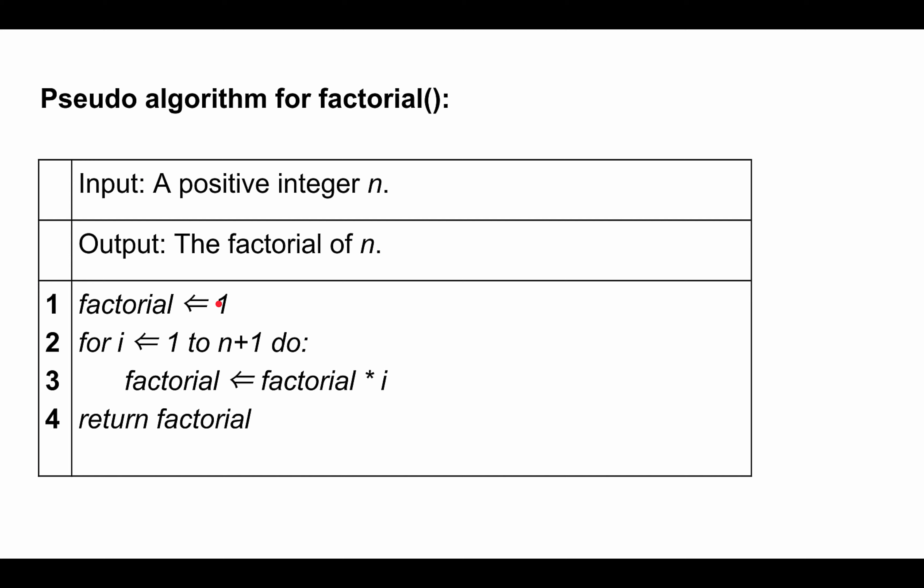Then line number three is executed n times and consists of three basic operations. The first one is assigning a value to a variable, then retrieving the value stored in factorial, and then multiplying by i.